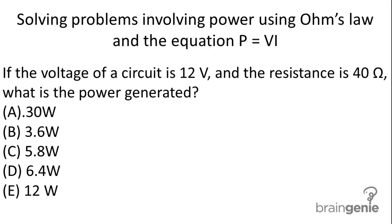Solving problems involving power using Ohm's Law and the equation P equals VI. If the voltage of a circuit is 12 volts and the resistance is 40 ohms, what is the power generated?